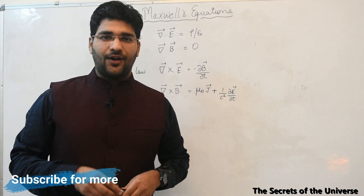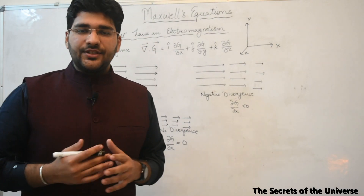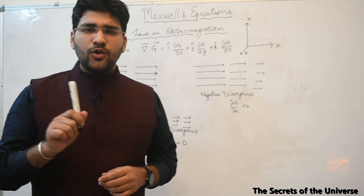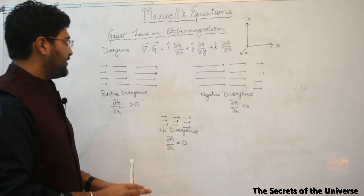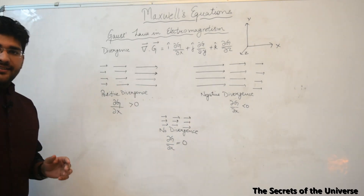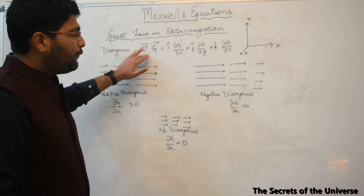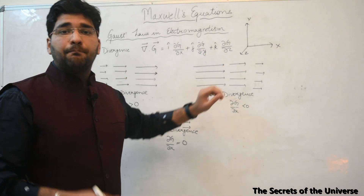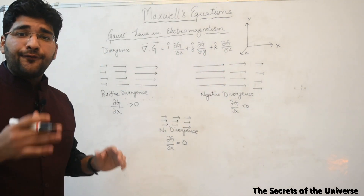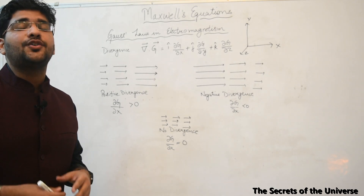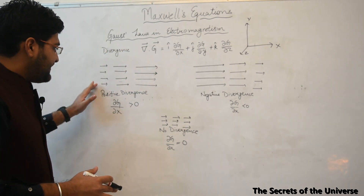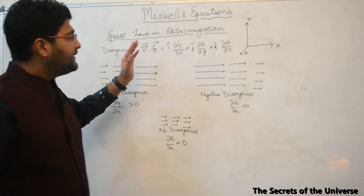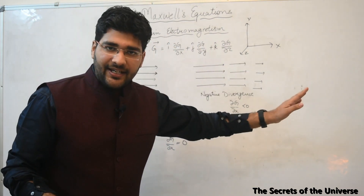Our first task is to understand Gauss's law in electricity and magnetism. In order to understand these two laws, we need to understand the meaning of the divergence of a vector field. Any math textbook will give you the mathematical formulation of divergence, but we need to understand its physical meaning. So we consider a vector field G depicted by arrows.